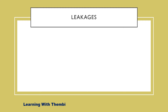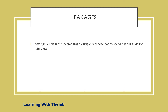Imports are not the only leakages we have in the circular flow. We also have savings. Savings refers to the income that participants choose not to spend, but put aside for future use. When income is not spent, it's saved either by firms or by households, and those savings will flow out of the circular flow to the financial sector, which comprises of financial institutions or banks. The banks will use the savings to lend to participants when they are in deficit. If borrowings exceed savings, then the money component in the circular flow will increase.